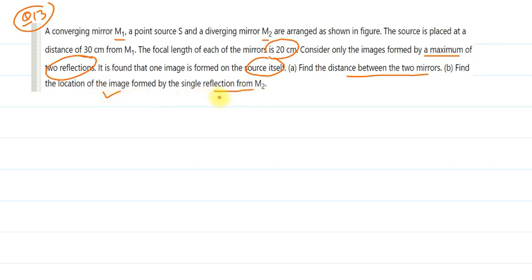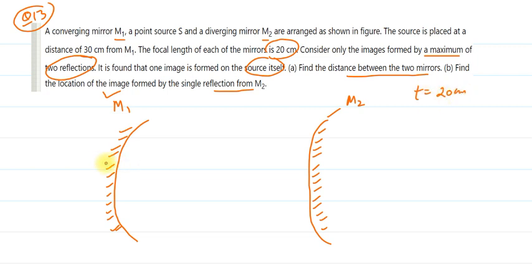The diagram is like this: We have one converging mirror, that is concave mirror M1, and secondly we have another mirror M2, but this is a diverging mirror, convex M2. Both mirrors have focal length 20 centimeters, and there is a source at a distance of 30 centimeters from M1.